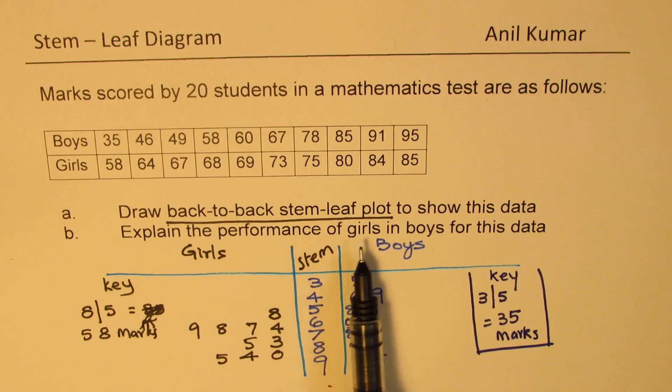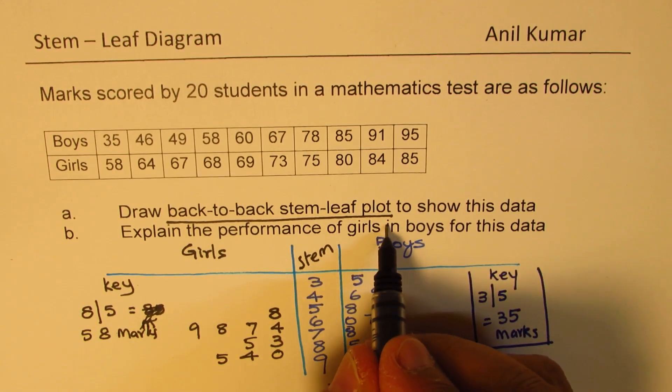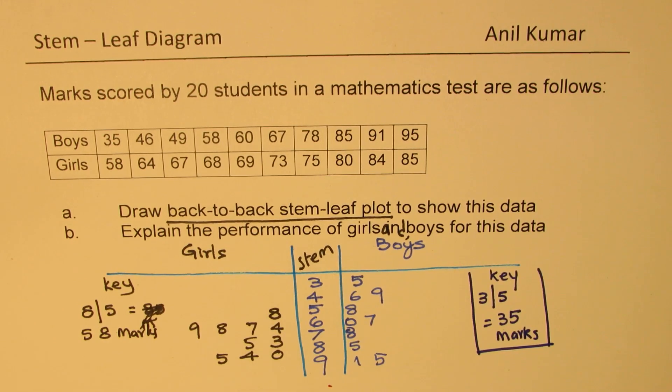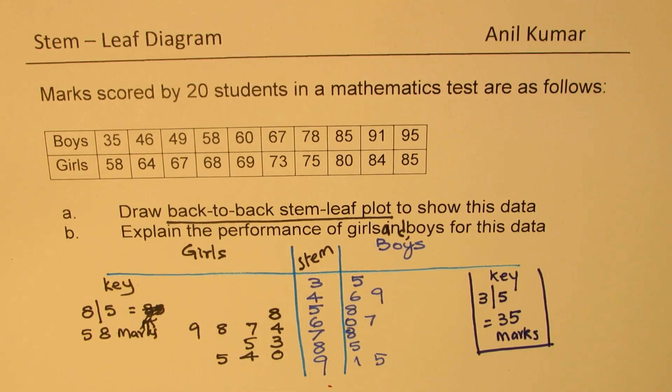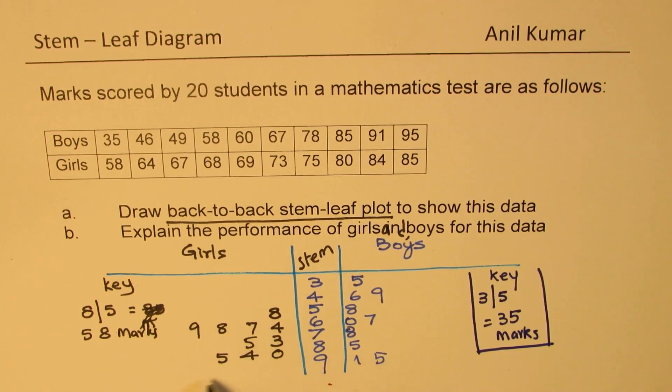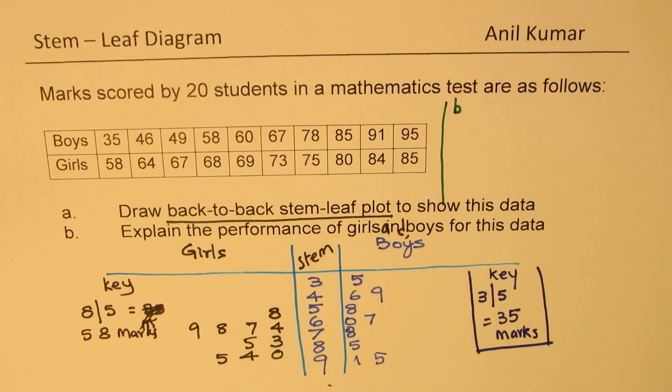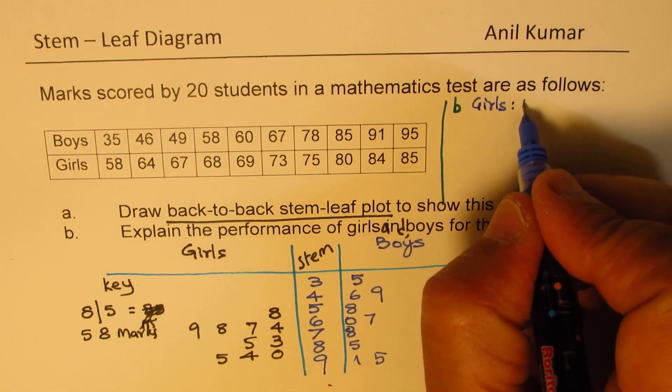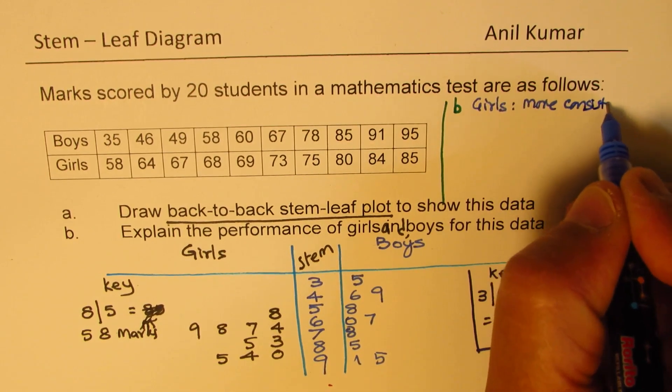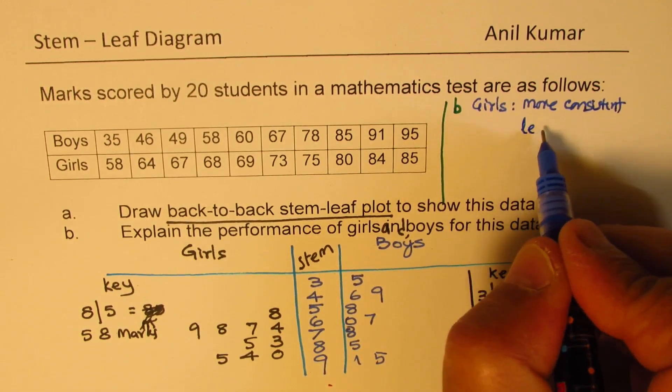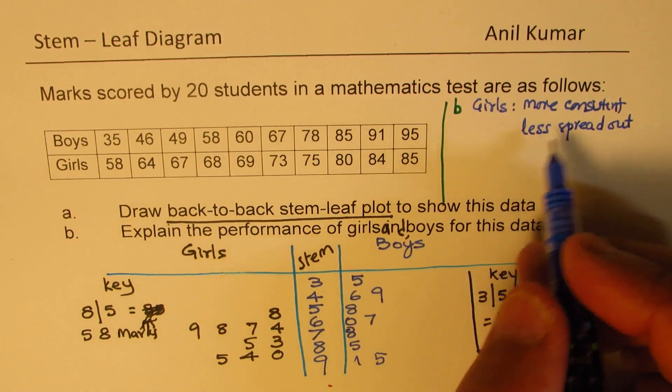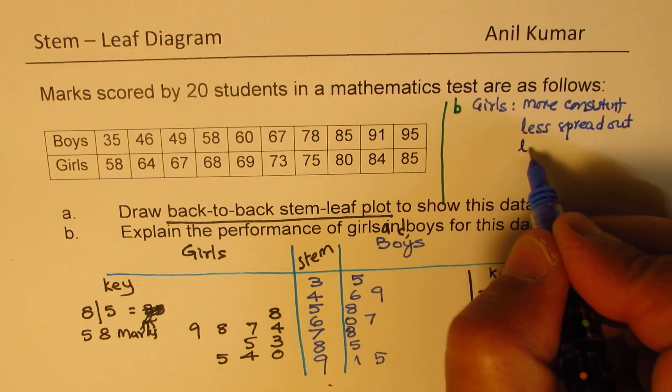Now part B is explain the performance of girls and boys for this data. So what do you, how do you explain this display of data? What does that explain to you? So one thing which we can always say is that the girls' data is more concentrated. So let's answer part B here. So as far as the girls' data is concerned, it is more consistent. More consistent means less spread out. That means the range is also minimum. So less range, lower range.